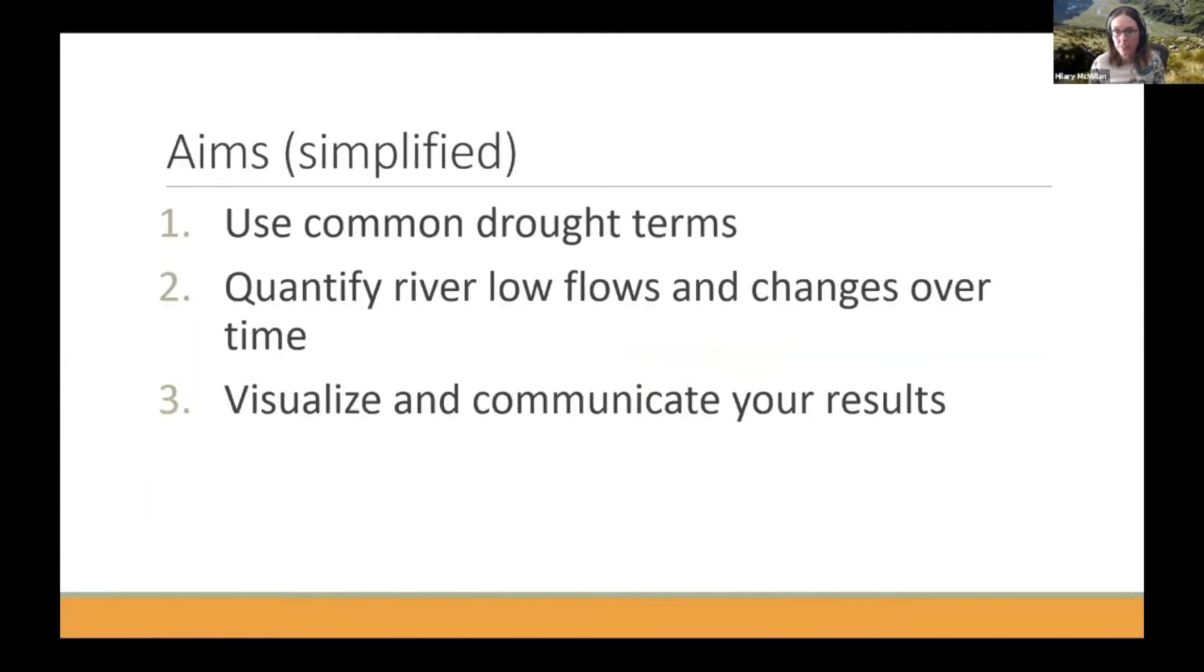In terms of the aims of the module in very simplified terms, we want the students to be able to do three things after they finish the module. So to be able to use common drought terms and know what they mean, to be able to quantify low flows in a river and quantify how they change over time, and to be able to visualize and communicate their results.